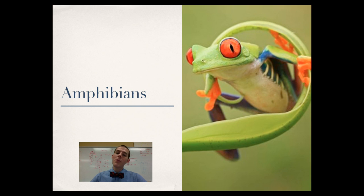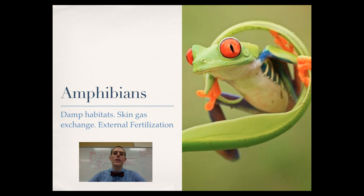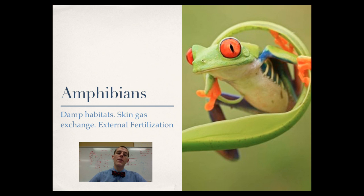The most basic tetrapod is the amphibian — frogs, salamanders, and caecilians. Special characteristics of amphibians: they need to live in damp habitats, though there are exceptions like toads, which are just frogs with thick, thick skin. They conduct a lot of gas exchange across their skin, though you do see some lungs. They rely on external fertilization for development, and in many amphibians there is a difference between the juvenile form and the adult form.